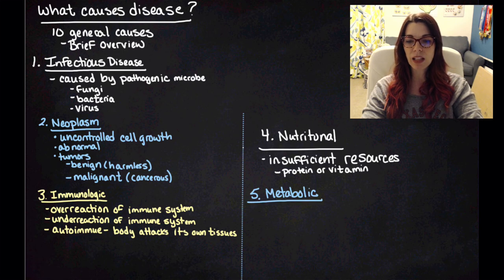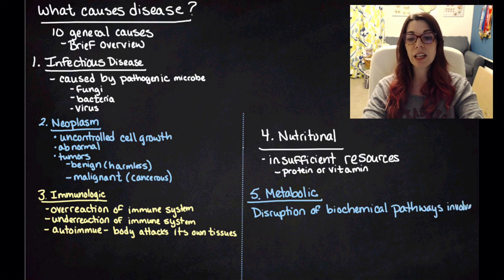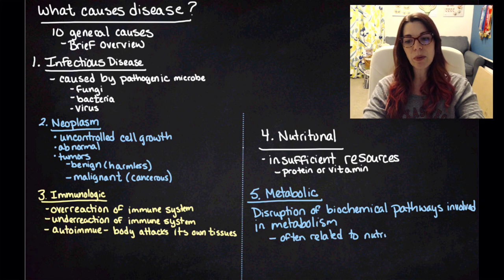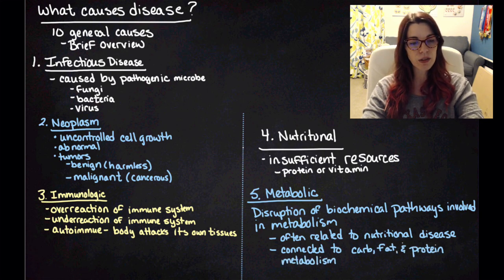Category number five is a metabolic disease. Metabolic diseases are disruptions of the biochemical pathways in your metabolism. So diabetes is the one that comes to mind for most people. But basically, they're going to often be related to nutritional diseases, because they're often going to be connected to carbs, fats, and protein intake, and how those are metabolized in the body. So there's our first five.